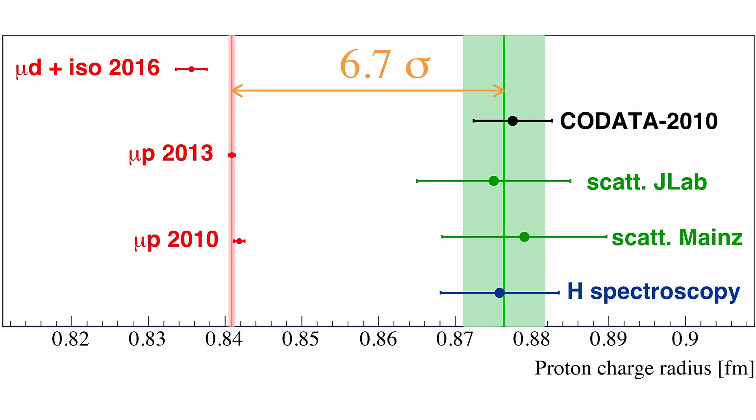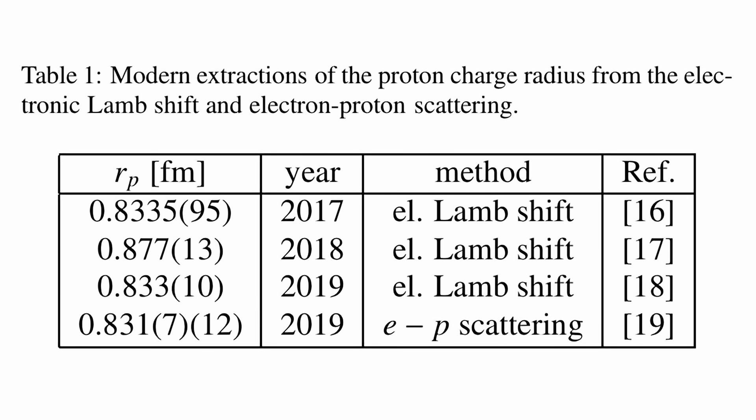Then, in 2019, new experiments using normal hydrogen spectroscopy also found a smaller proton radius, around 0.84 femtometers, matching the muonic hydrogen result. This discovery meant that the discrepancy could no longer be dismissed as an issue exclusive to muonic hydrogen. Instead, it suggested that the older electron scattering measurements may have systematically overestimated the proton size.